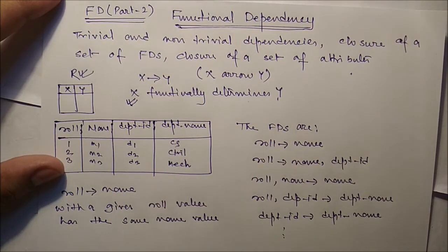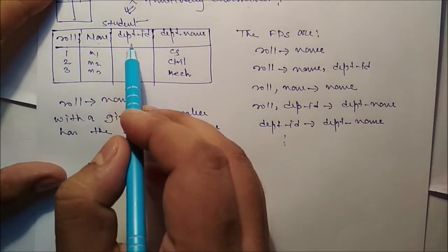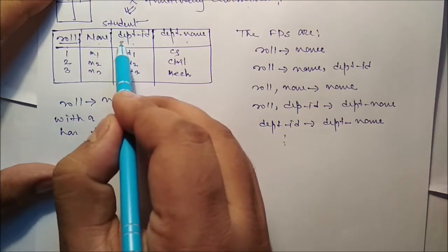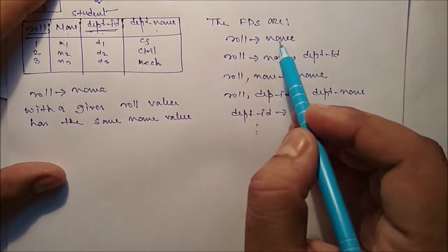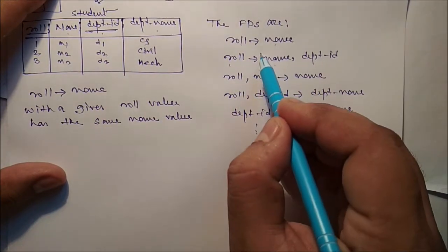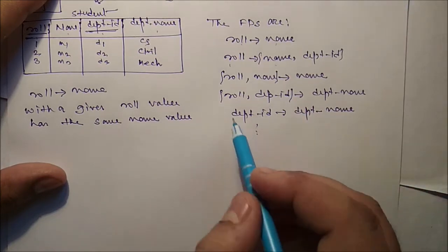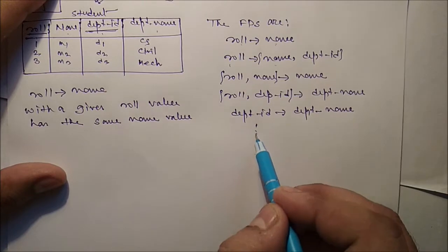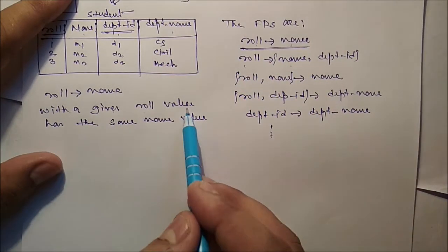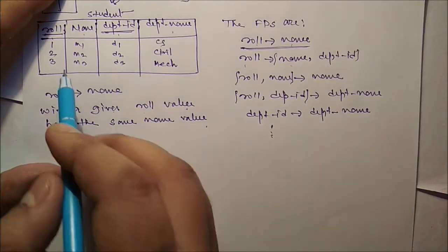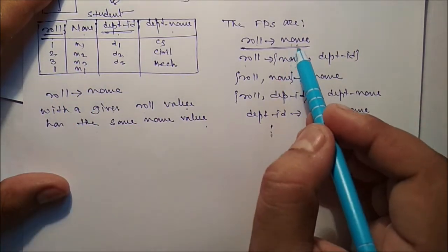Consider a table called Student with attributes: roll number, name, department ID, and department name. Let roll number and department ID be the key. The functional dependencies we can identify are: roll number determines name; roll number and department ID together determine name; department ID determines department name. So with a given roll number value, the name is always the same.